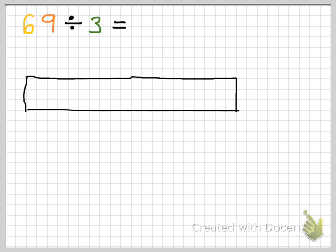So, there's 60. And then we need to do 9 — 3 times 3 is 9: 1, 2, 3 across and 1, 2, 3 down. So, you would write 3 because there are 3 down. We went across — there are 60 squares in here, 3 times 20. And then there are 9 squares in there. Now you can use this array to figure out the quotient.